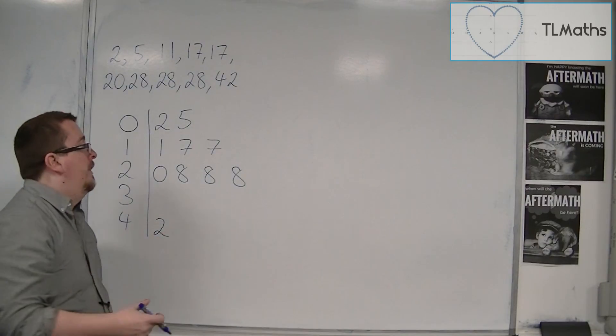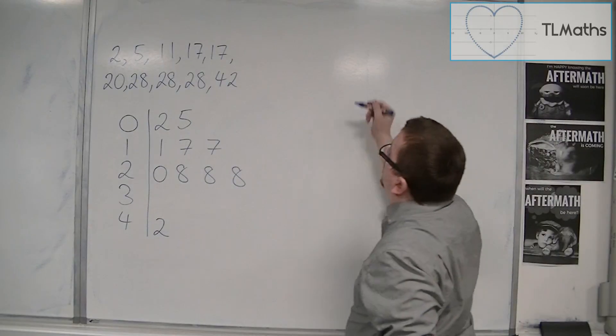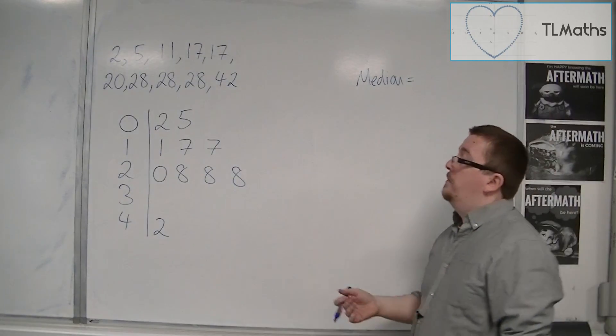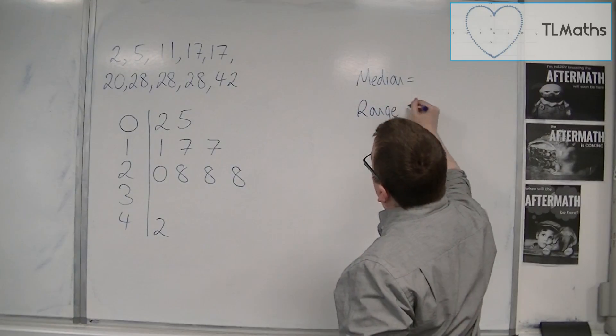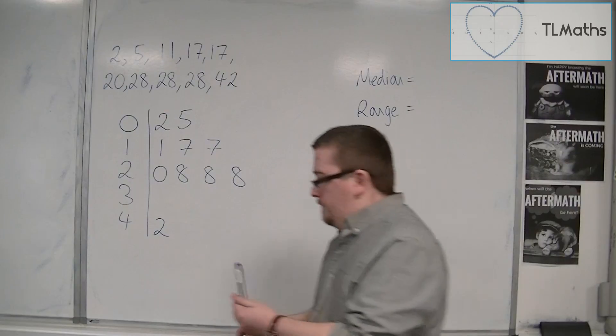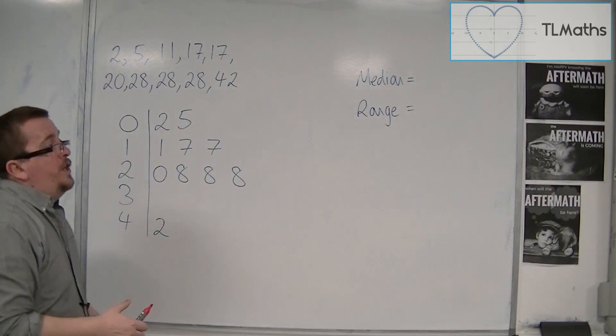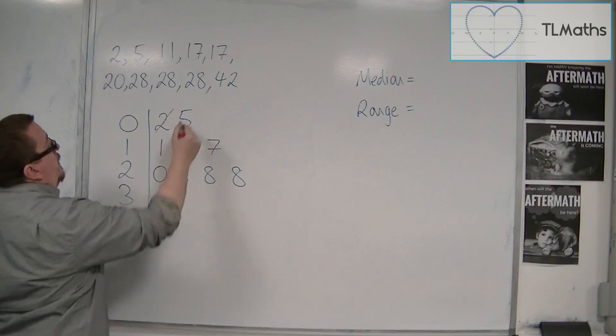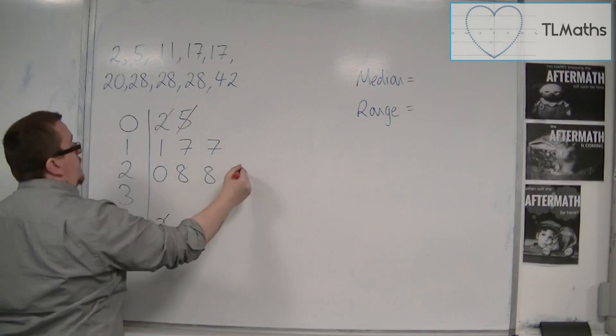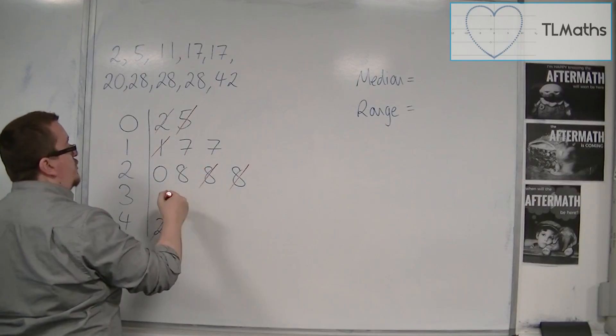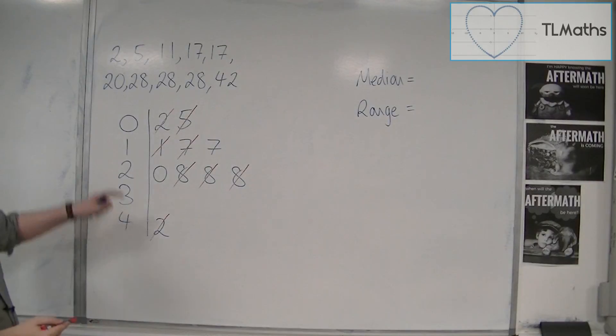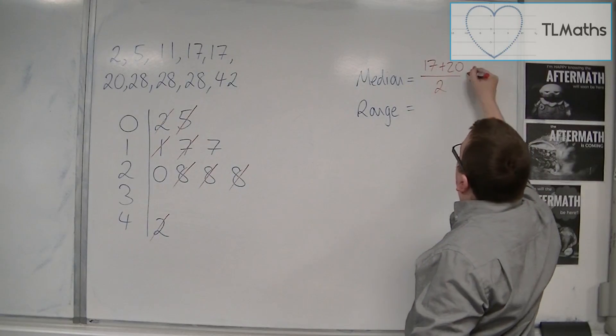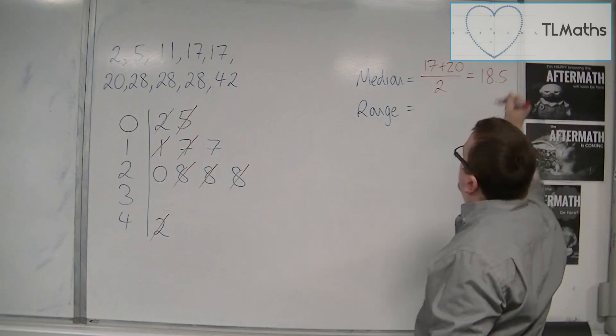And then from this, you can be asked things like median. You could be asked for the lower quartile, the upper quartile, you could be asked for the range. So if I was asked for the median, for example, then what you would usually do is cross them off from either end. So you cross off the lower and the upper, or the least and the largest values. The least value, the next largest, the next least, the next largest, the next least, the next largest. And then we can see that we're between 17 and 20. So 17 plus 20 over 2, that's 18.5. So 18.5 is the median.